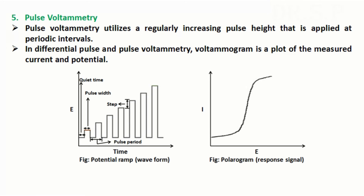Pulse voltammetry utilizes a regularly increasing pulse height that is applied at periodic intervals. In differential pulse and pulse voltammetry, the voltammogram is a plot of the measured current versus potential. In the figure you can clearly see the quiet time, pulse width, pulse period, and pulse step. A pulse is a very short-lived signal. Normal pulse polarography is shown in the figure.